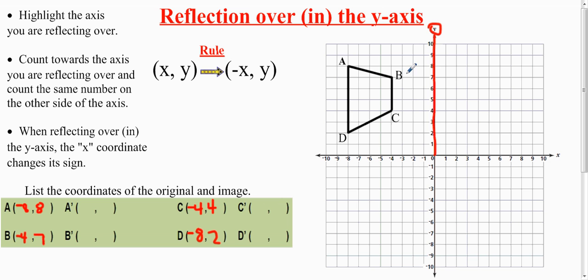I'm going to count 1, 2, 3, 4. As soon as I reach the y-axis, I know on the other side I have to do the same thing: 1, 2, 3, 4. Once I put that point down, I list it as prime, and that's B prime.